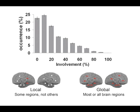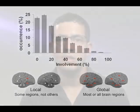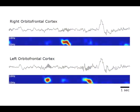Since slow waves occurred mostly locally, we wondered whether the other signature of sleep EEG, sleep spindles, may also occur in a regional manner. To our surprise, we found many local sleep spindles. In fact, just like slow waves, most spindles occurred in some regions and not others.